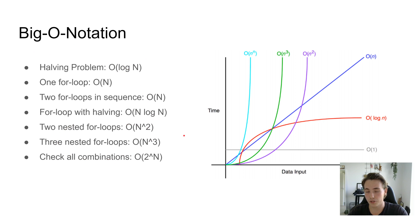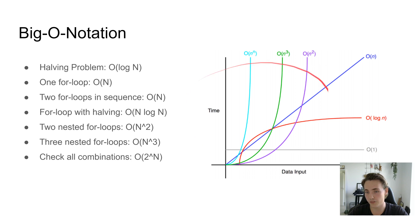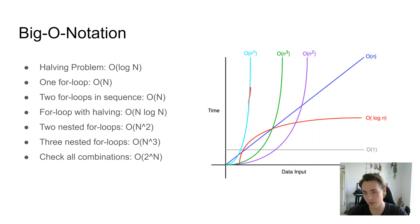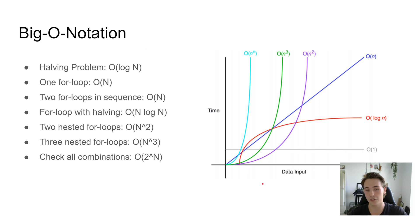This is just a short introduction to big O notation and we're going to use it in pretty much all videos in this tutorial. Looking at the graph, the more combinations we check, the more time shoots up, whereas O(log n) — like in a binary search tree — keeps things much more manageable. We'll talk more about this in later videos.